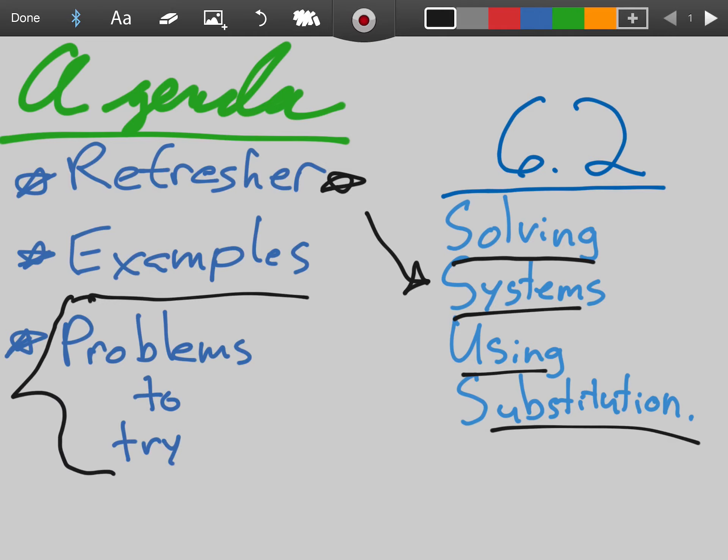For the refresher, this won't take too long. Recall that when we were working with systems in 6.1, we were being asked to graph out the systems, which was maybe two or more equations. So we would graph these out, and we would see where these two lines would intersect. Based off of that, we would say that where that intersection occurs, that is our solution.